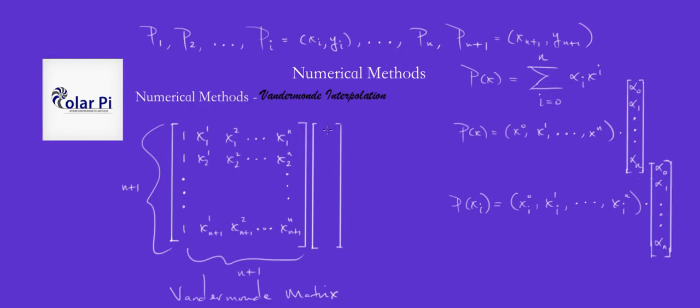So we have this times alpha 0, alpha 1, alpha n at the end, and this is going to equal, well let's see, what is P of X i? Since X i Y i is a point on our polynomial, P of X i better be Y i for each i. So what I should have on the right side as a result of the Vandermonde matrix times the coefficient matrix should be the Y i's, namely Y 1, Y 2, all the way through Y n plus 1.